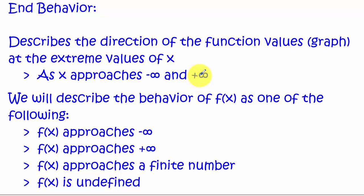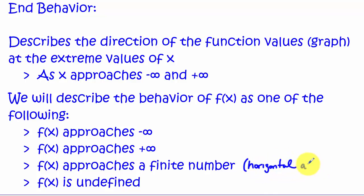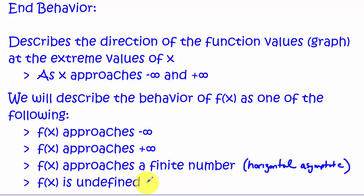When looking at end behavior, the y value or f(x) could do one of four things: it might be approaching positive or negative infinity; it might be approaching a finite number, meaning the graph would be leveling out — this is referred to as a horizontal asymptote, which we've seen in exponential functions and rational functions; or f(x) may be undefined, because the domain does not include all real numbers, as we saw with logarithm functions.